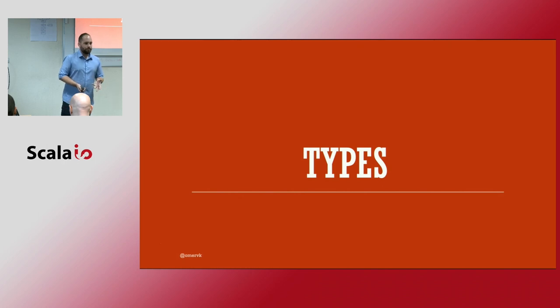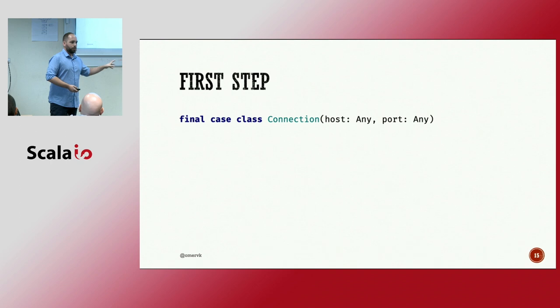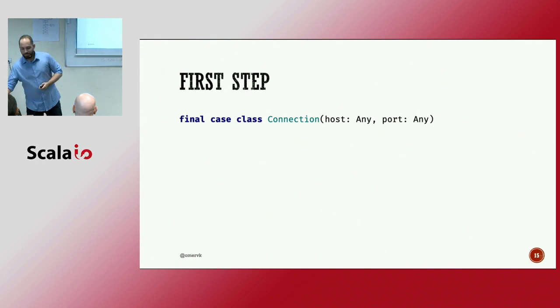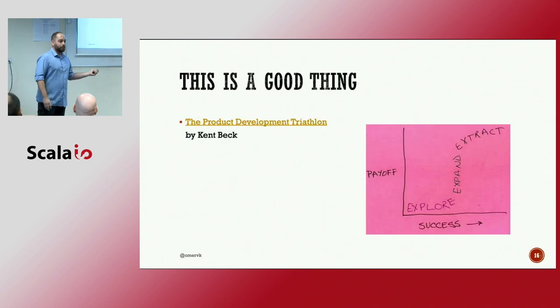Surprisingly enough, those are types. I'm sure I'm not telling anyone anything new, right? So let's look at the first step. Let's take a new example and work our way through it. So we have a connection class. I'm sure most of you have seen something like this. And we have a host and we have a port. But both of them are anything. Just anything. We started without types at all. So is this a good thing? Who thinks this is a good thing? Nice. Who thinks this is a bad thing? Seems unanimous. But it is a good thing.